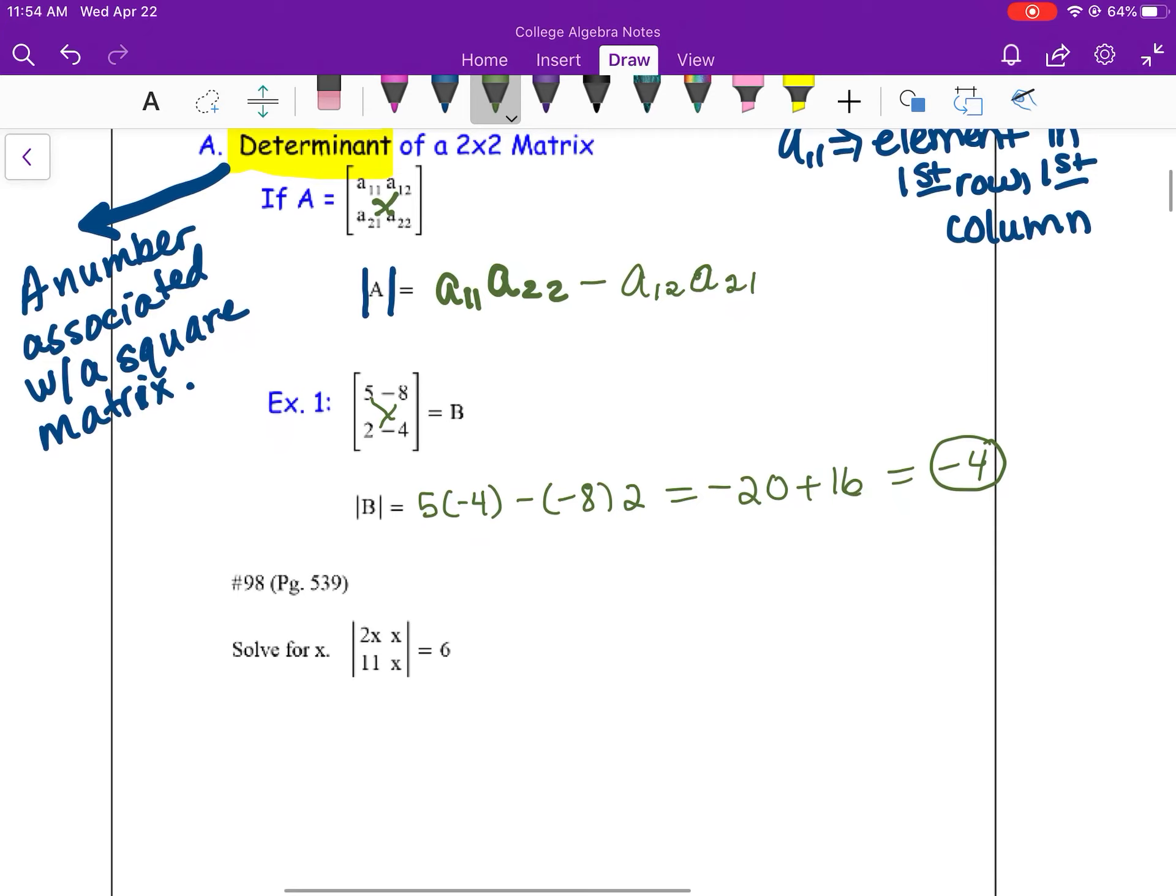We're going to apply that here to number 98. You might have some like this in your homework. I see that my normal brackets around the matrix have been switched to these vertical bars. That is code for find the determinant. So I'm going to do that here on the left. 2X times X is 2X squared, 11 times X is 11X. So again, I took that diagonal minus that diagonal, and that equals 6.